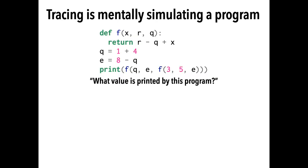Program tracing is the task of mentally simulating a program with concrete inputs to produce a concrete output. For example, to trace this program, you would mentally compute q is equal to 5, e is equal to 3, and so on.